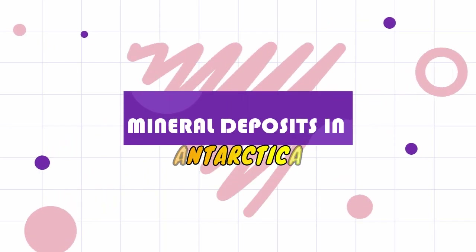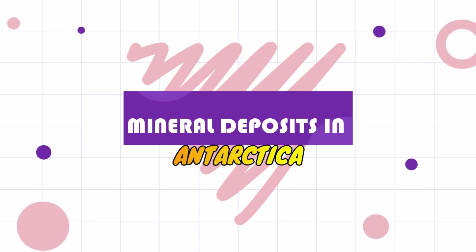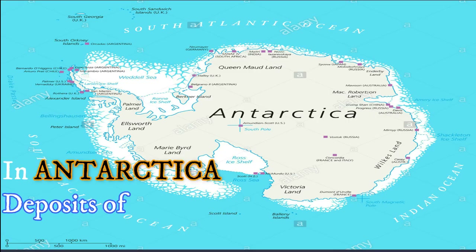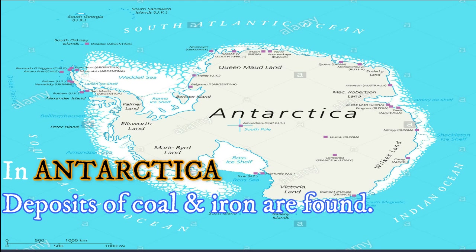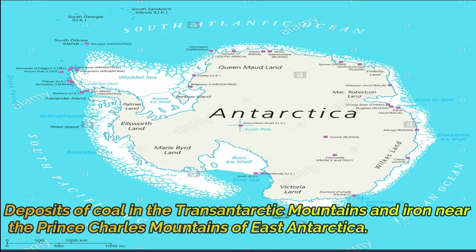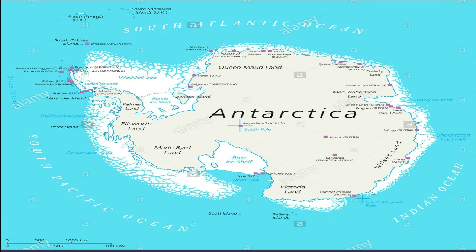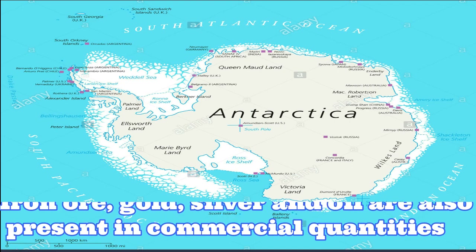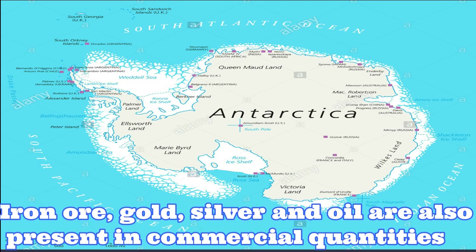Now let us know about the distribution of minerals in Antarctica. It is predicted that Antarctica has huge deposits of coal and iron. Deposits of coal are found in the Trans-Antarctic Mountains, and iron is found near the Prince Charles Mountains of East Antarctica. Apart from coal and iron, we will also find gold, silver, oil, and iron ore in commercial quantities.